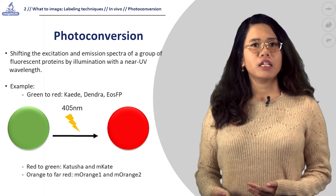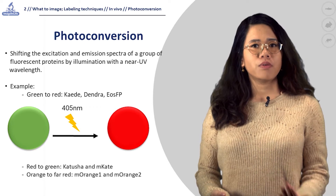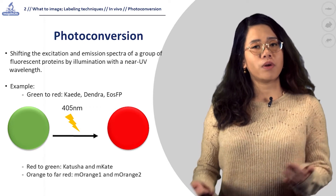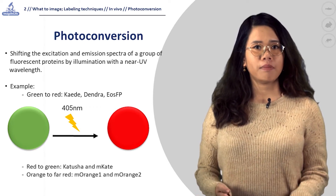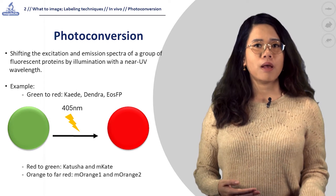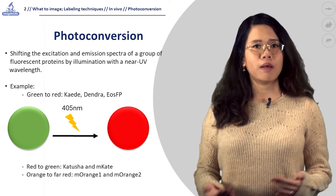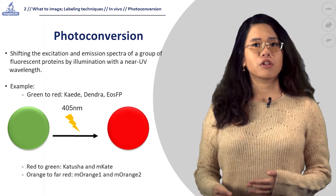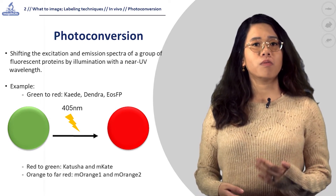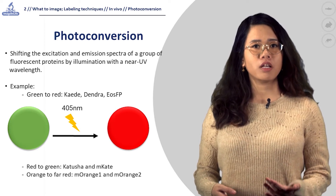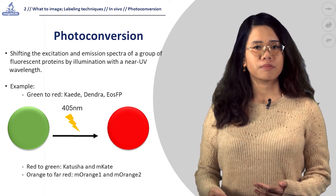In addition to green-to-red photoconversion, there are also red-to-green variants such as Katusha and M-Kate, and orange-to-fire-red variants M-Orange-1 and M-Orange-2, which could provide more possibilities for different labeling combinations.